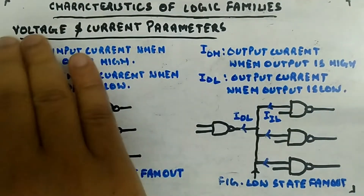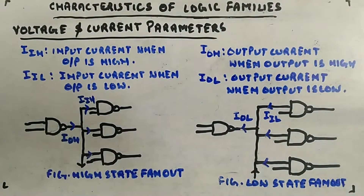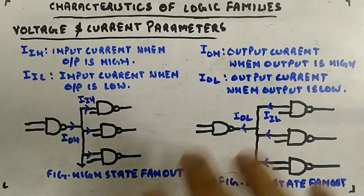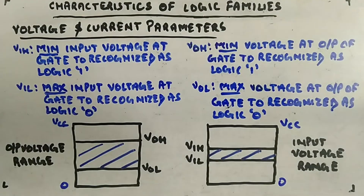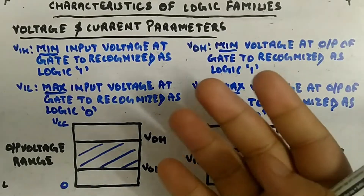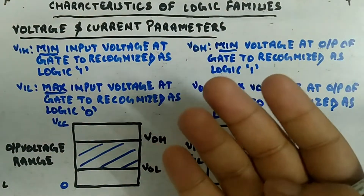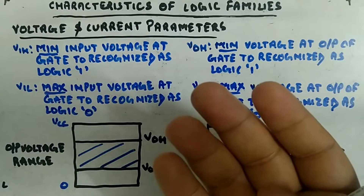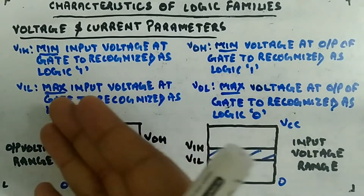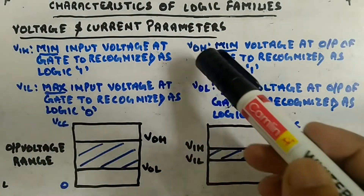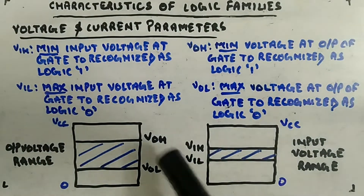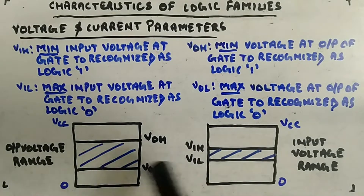Now moving to voltage parameters, which will be used in noise margin. Just like current parameters had four parameters — IIH, IIL, IOH, IOL — here also we have four voltage parameters: VIH, VIL, VOH, and VOL.